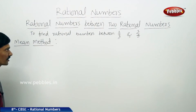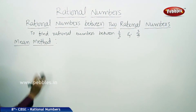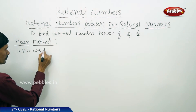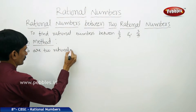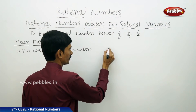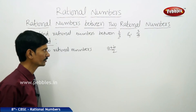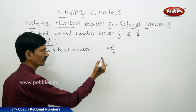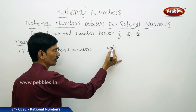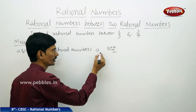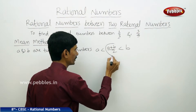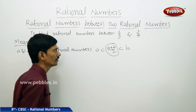There is another method to find rational numbers between any two given rational numbers — the mean method. If A and B are any two rational numbers, their arithmetic mean is A plus B divided by 2. This arithmetic mean lies between A and B, meaning A is less than (A plus B) by 2, which is less than B.